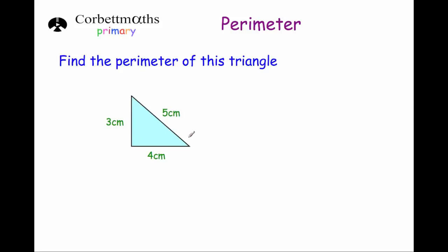Our next shape is a triangle — just to show it's not always rectangles and squares, it could be other shapes. Here's a triangle with three centimeters, four centimeters, and five centimeters. To find the perimeter of this triangle, we just add those together: three plus four is seven, plus another five is 12. So the answer is 12 centimeters.